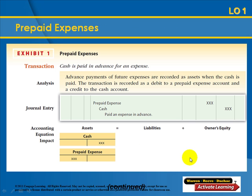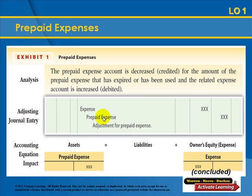Let's look at example journal entries. To record the advance payment, we debit prepaid expense and credit cash to show that we paid for it — this sits in an asset account. Then, once time has passed and the month is up, we adjust the account by debiting the associated expense account and crediting the prepaid expense account to reduce it and convert it to an expense. Notice that cash is not used in the adjusting entry; cash is only used in the original entry when you paid for the prepaid expense. To adjust the prepaid expense, debit the expense account and credit the prepaid expense account.